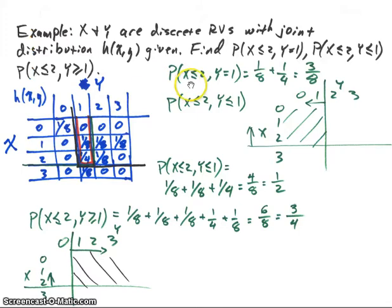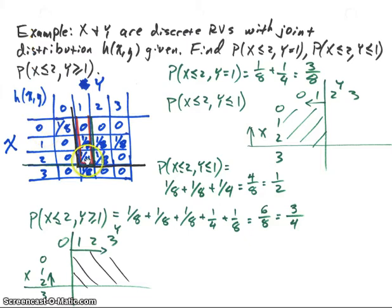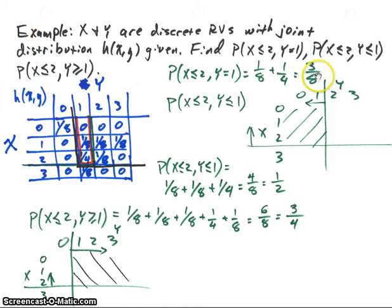For the probability that X is less than or equal to 2 and Y equals 1: looking at the table, X less than or equal to 2 includes values 2, 1, and 0, and Y equals 1. Where those occur simultaneously — I've boxed them in red — the probability is the sum of those probabilities: 0, 1/8, and 1/4. Summing 1/8 and 1/4 gives 3/8.